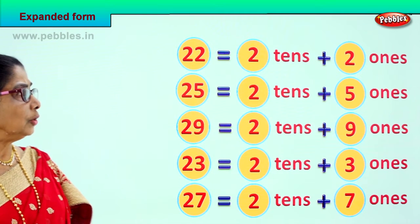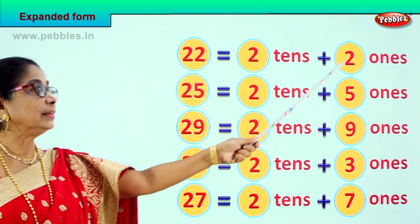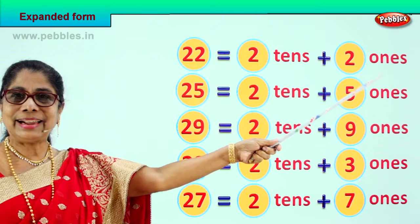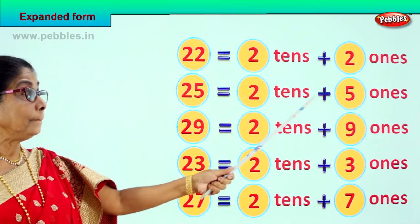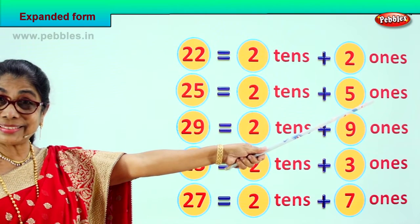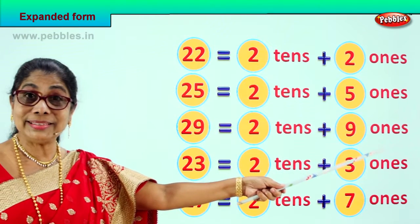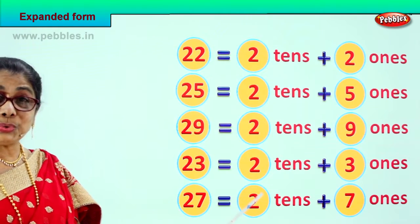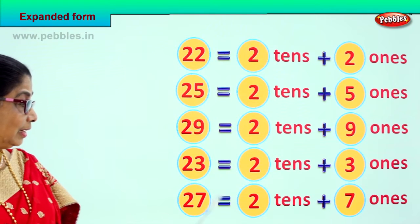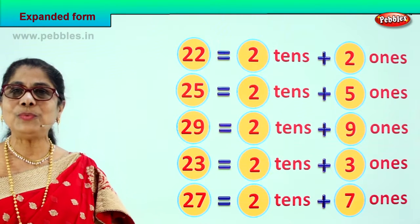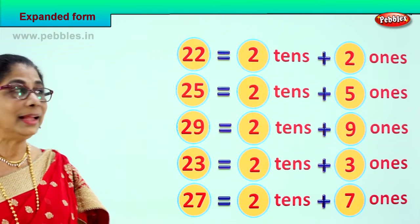Let's look at it all. 22 is 2 tens plus 2 ones. 25 is 2 tens plus 5 ones. 29 is 2 tens plus 9 ones. 23 is 2 tens plus 3 ones. And 27 is 2 tens plus 7 ones. Did you enjoy? Good. Let's take another set of sums.